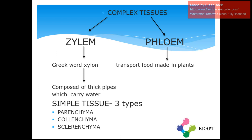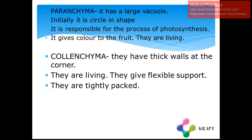Now let us learn about simple tissues. Simple tissues are divided into three parts: parenchyma, colenchyma, and sclerenchyma. Parenchyma has a large vacuole, is circular in shape, and is responsible for the process of photosynthesis.